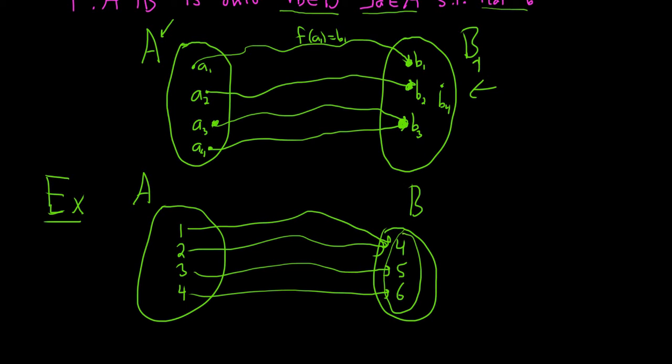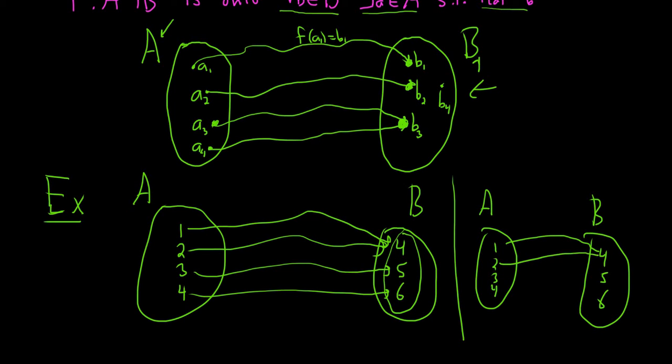Whereas if you do something like this, this is A, 1, 2, 3, 4. This is B, 4, 5, 6. If I do this, 1 goes to 4. 2 goes to 4. 3 goes to 5. 4 goes to 5. This is not surjective. Because the element 6 does not get hit.